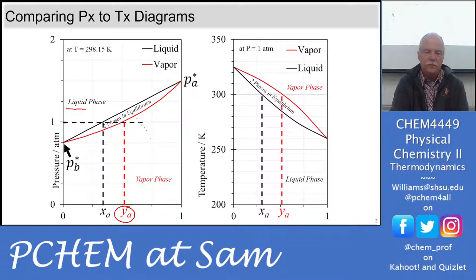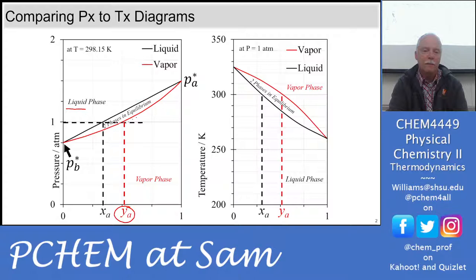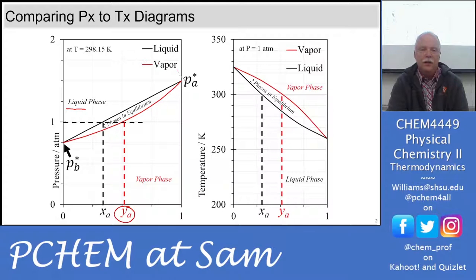How do we know which side is liquid and which is vapor? At really low pressure we have vapor; at really high pressure we have liquid. If you squeeze on the vapor you eventually squeeze all of it into the liquid phase. Where you have these lines you have two phases in equilibrium. Way over here is the pure substance vapor pressure of A at this temperature — the highest pressure — so that's a very volatile substance. This other end has a really low vapor pressure at room temperature.